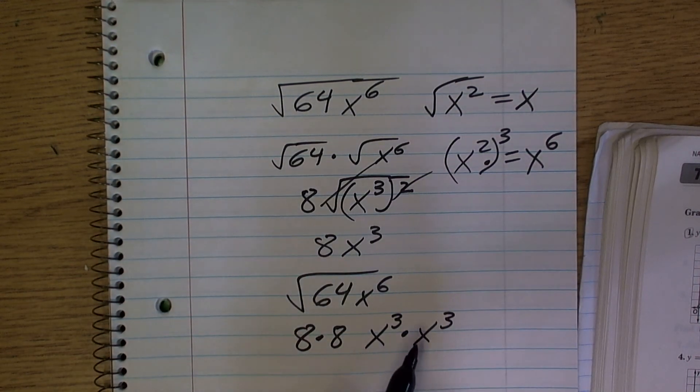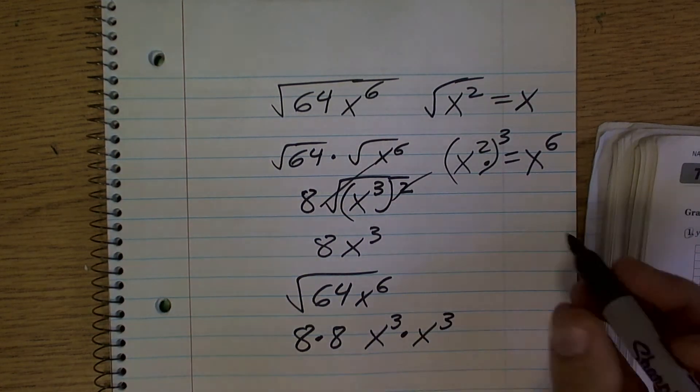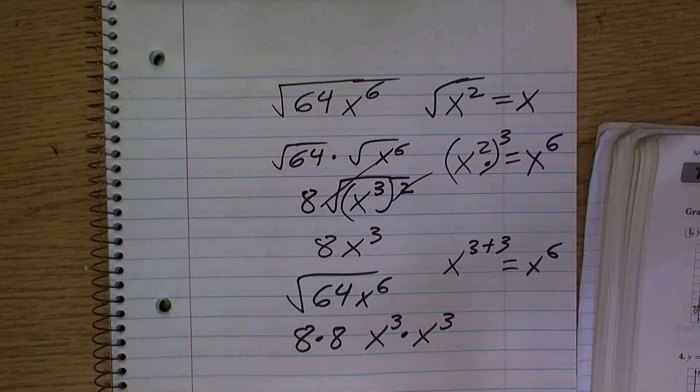Alright. So, pretty much when we're taking this out, this equals, right, because if you have x cubed plus 3 equals x to the 6th, right?